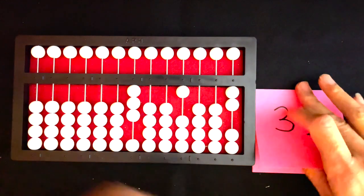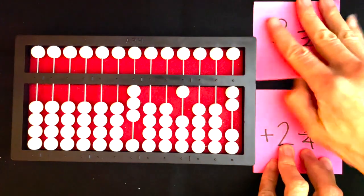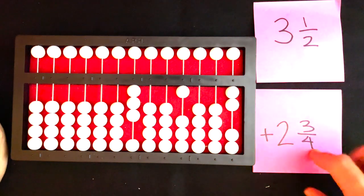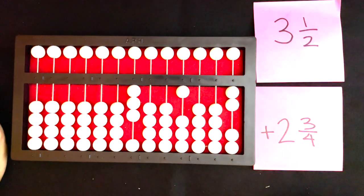I want to add two and three-fourths. The first thing that I need to do is find the least common denominator.